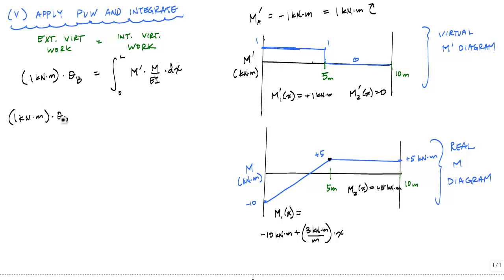I have two segments, so I'm going to integrate first from zero to five meters. My virtual moment here from zero to five meters is one kilonewton meter. The real curvature, which is technically a curvature, and because EI is constant, I can just substitute this as M over EI times dx.